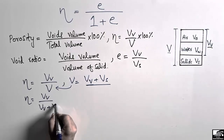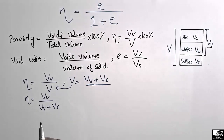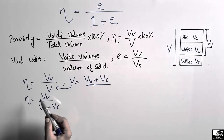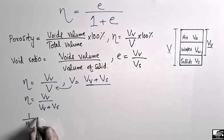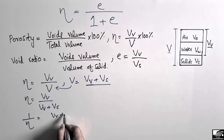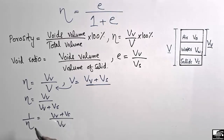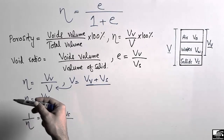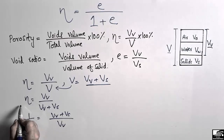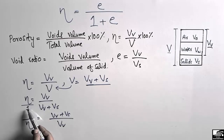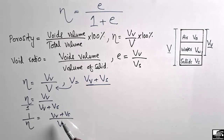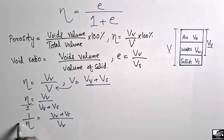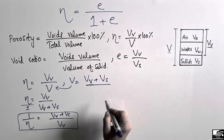Now we want to take the reciprocal of n. By taking the reciprocal, it becomes 1 over n equals VV plus VS divided by VV. We simply swap the numerator and denominator — just as n over 1 becomes 1 over n, VV comes to the denominator and VV plus VS comes to the numerator.